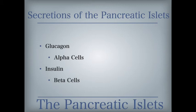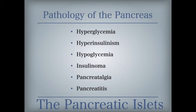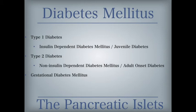Pathology: hyperglycemia is an abnormally high concentration of glucose in the blood, with symptoms including polyuria and polydipsia. Hyperinsulinism is a condition marked by excessive secretion of insulin that produces hypoglycemia — an abnormally low concentration of glucose in the blood. An insulinoma is a benign tumor of the pancreas that causes hypoglycemia. Pancreatalgia means pain in the pancreas; pancreatitis is an inflammation of the pancreas. Diabetes mellitus is a group of metabolic diseases characterized by hyperglycemia resulting from defects in insulin secretion, insulin action, or both; treatment goals are to control blood sugar levels and prevent diabetic complications.